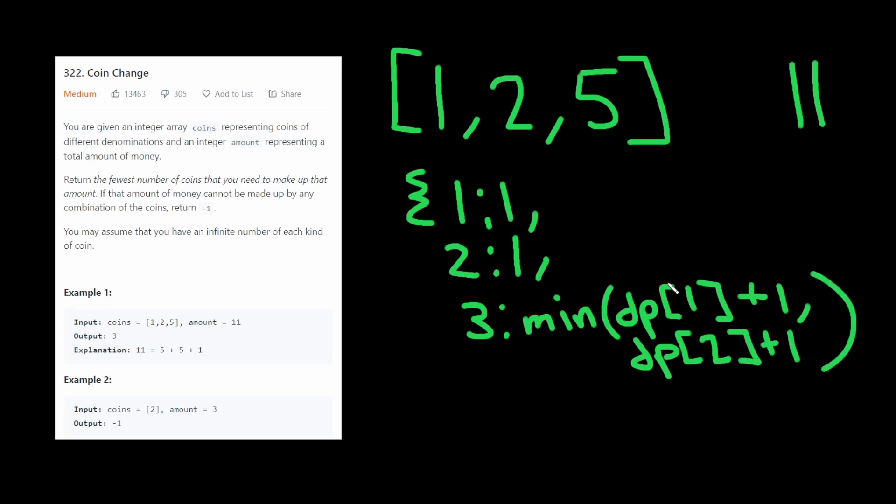And so why does this work? Well, we know that we can subtract 2 from 3 to get to 1, and then we just use the previous value here. We also know that we can subtract 1 from 3 and get 2 and use the previous value. And we just want the minimum of those. And so this is very similar to the recursion that we were doing, but we actually just have the values already stored, so we don't have to do any recalculation. And then same thing for 4. So 4 is going to be exactly the same. So minimum of dp at 2 plus 1 and 3 plus 1.